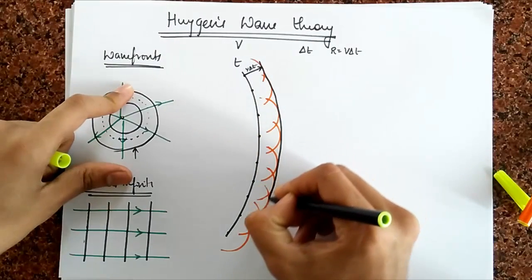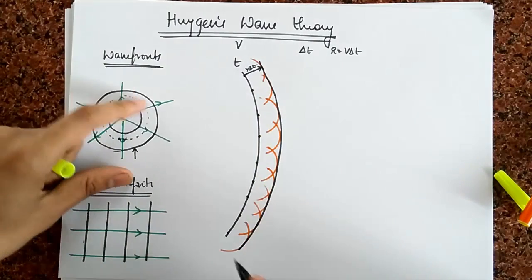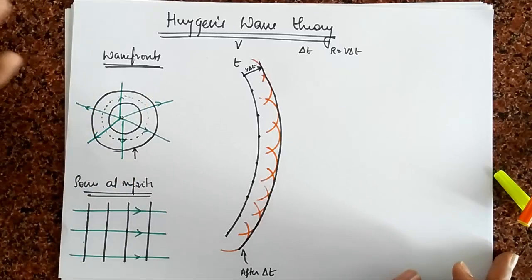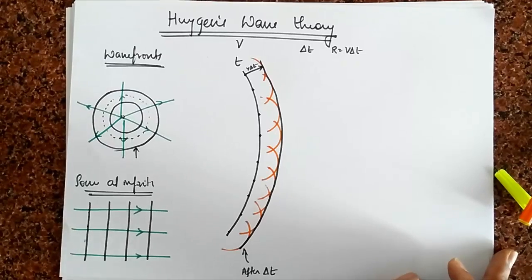This is going to be the new wave front. And so this is the wave front after time delta t. That's the basic idea of wave fronts given by Christian Huygens.